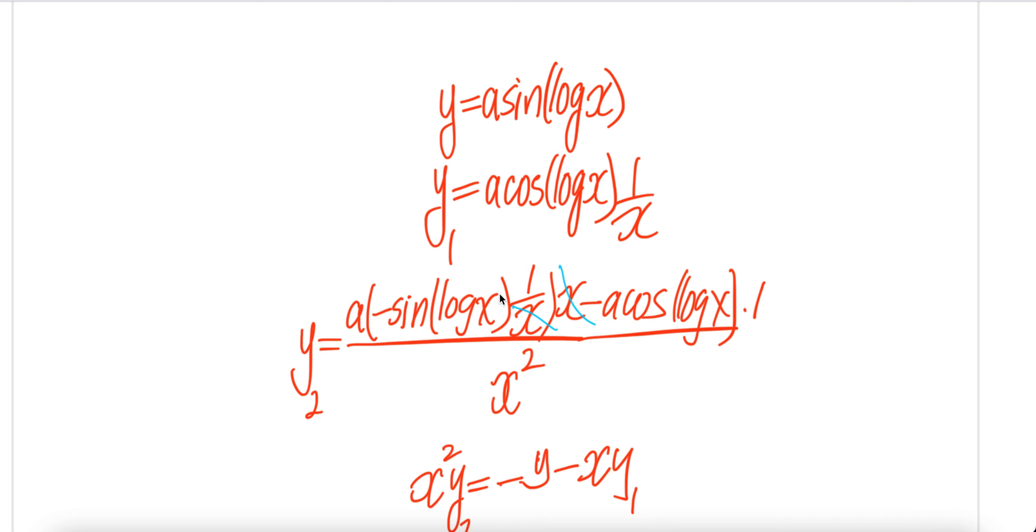Square the denominator, derivative of the numerator. a comes out from the derivative. Take the derivative of cos, it's negative sin(log x) times the derivative of inside which is 1/x, times the second function. This is the first function times the second function minus the first function times the derivative of the second function, which is 1.